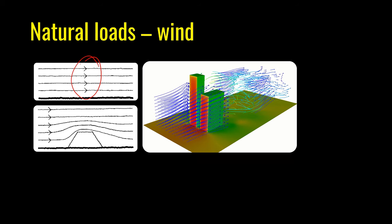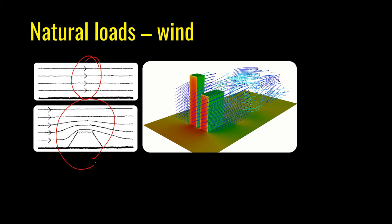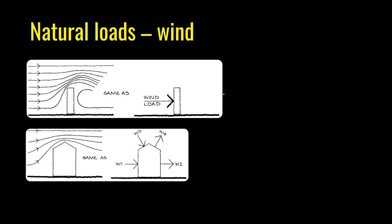Any obstruction in the wind path changes the pattern of wind flow, as shown in the figure — wind flows around the object depending on wind speed and shape. Alteration of wind flow pattern causes a wind load. For a rectangular object, if the roof is sloping, the building experiences forces W1, W2, W3, and W4 acting at right angles to the surface. Forces pointing inward are on the windward side; forces pointing outward relate to the leeward side.